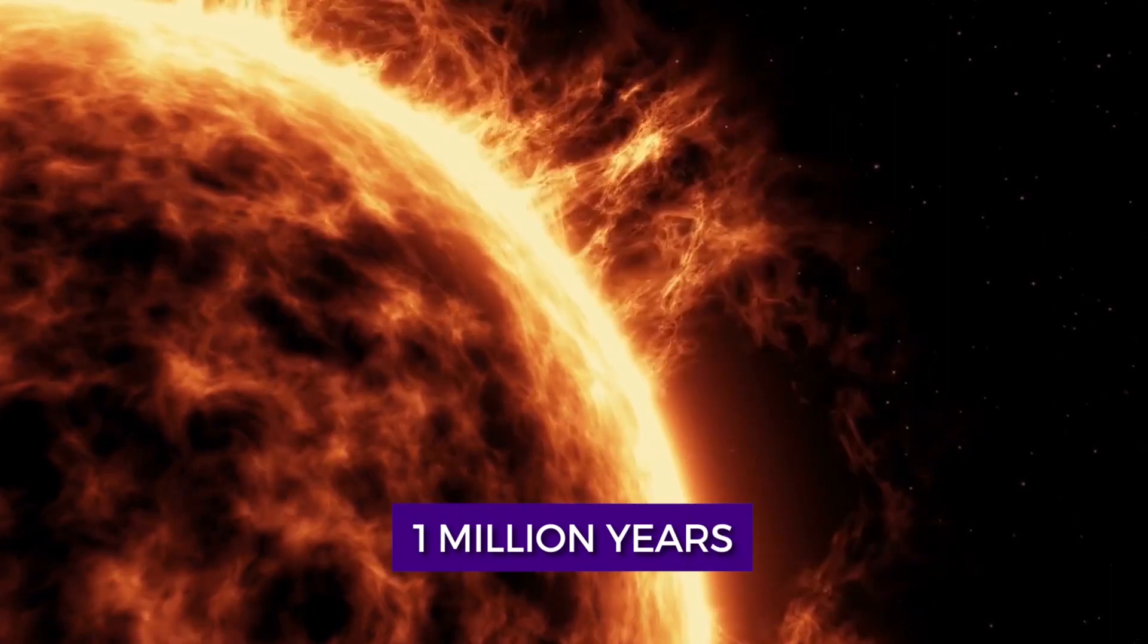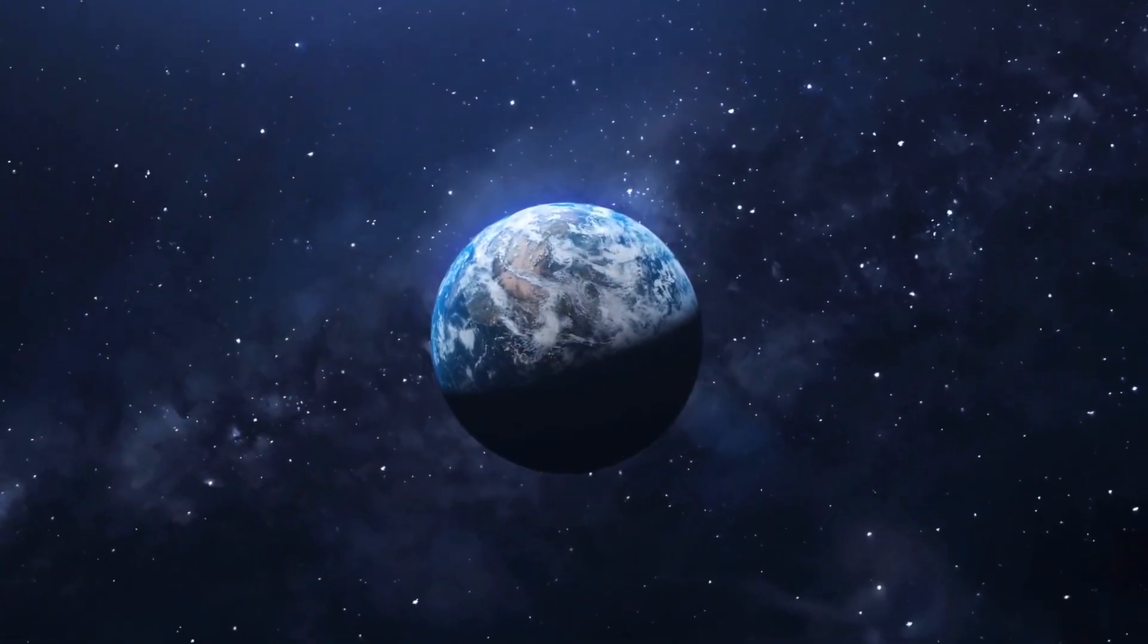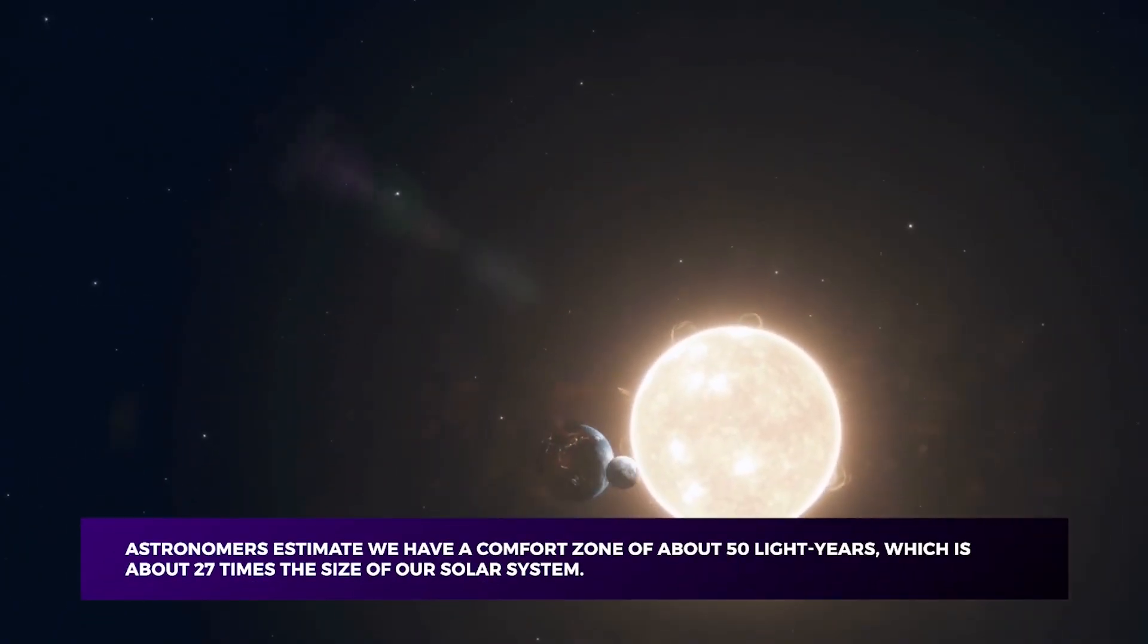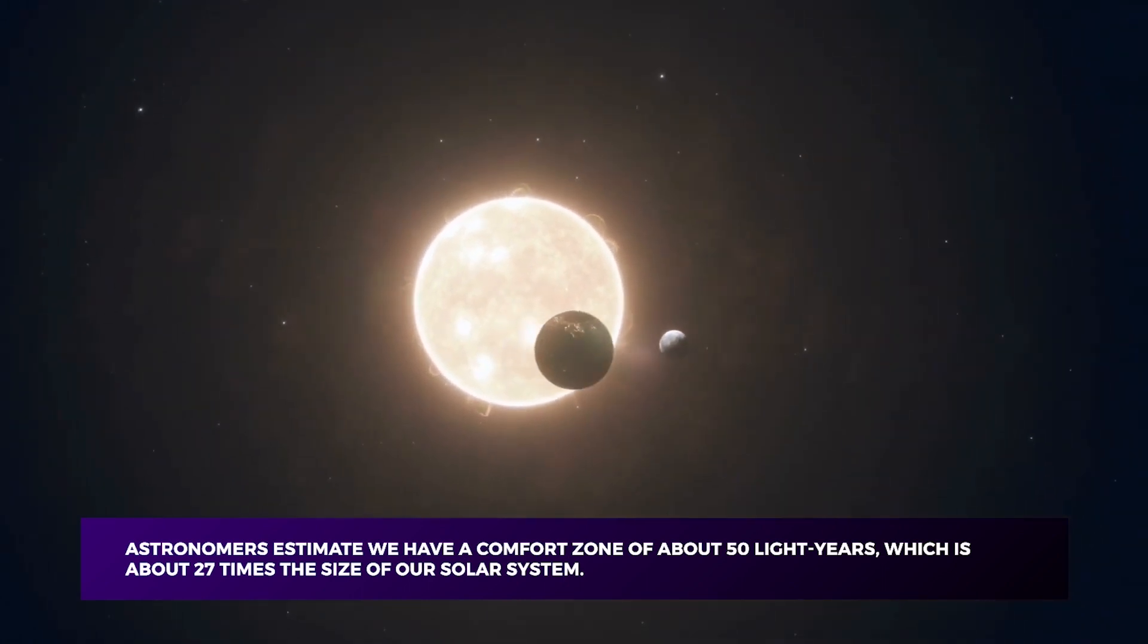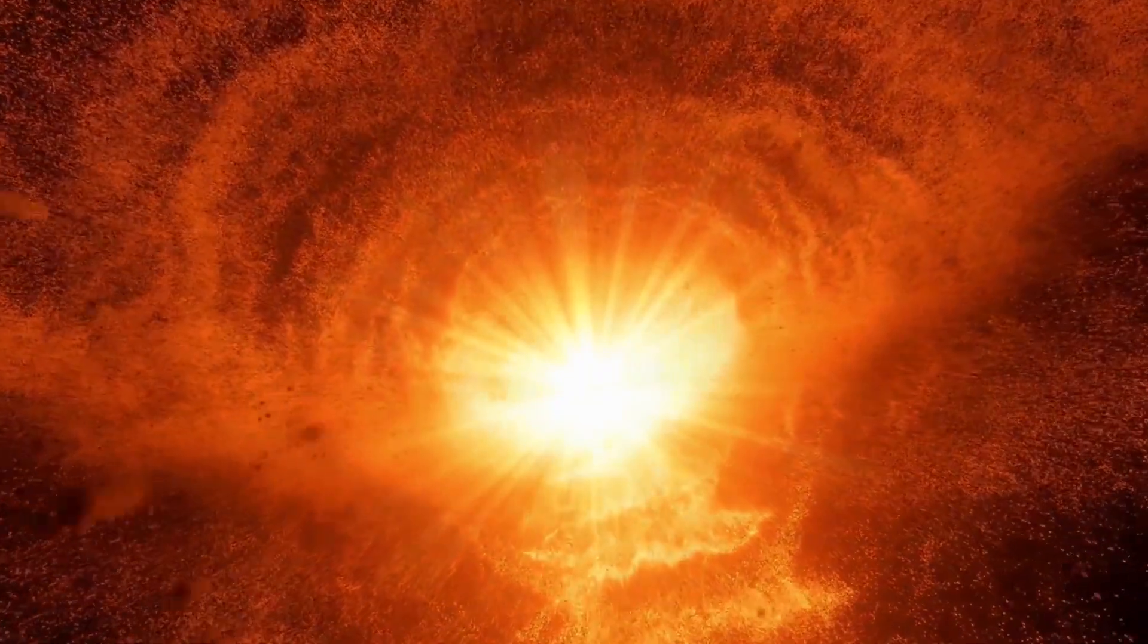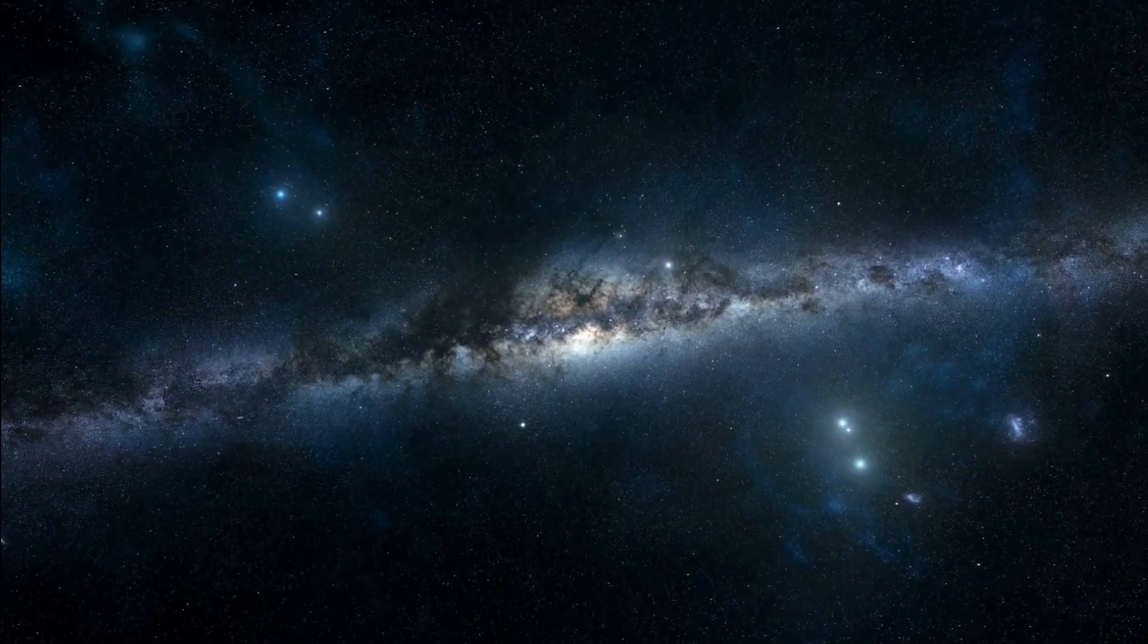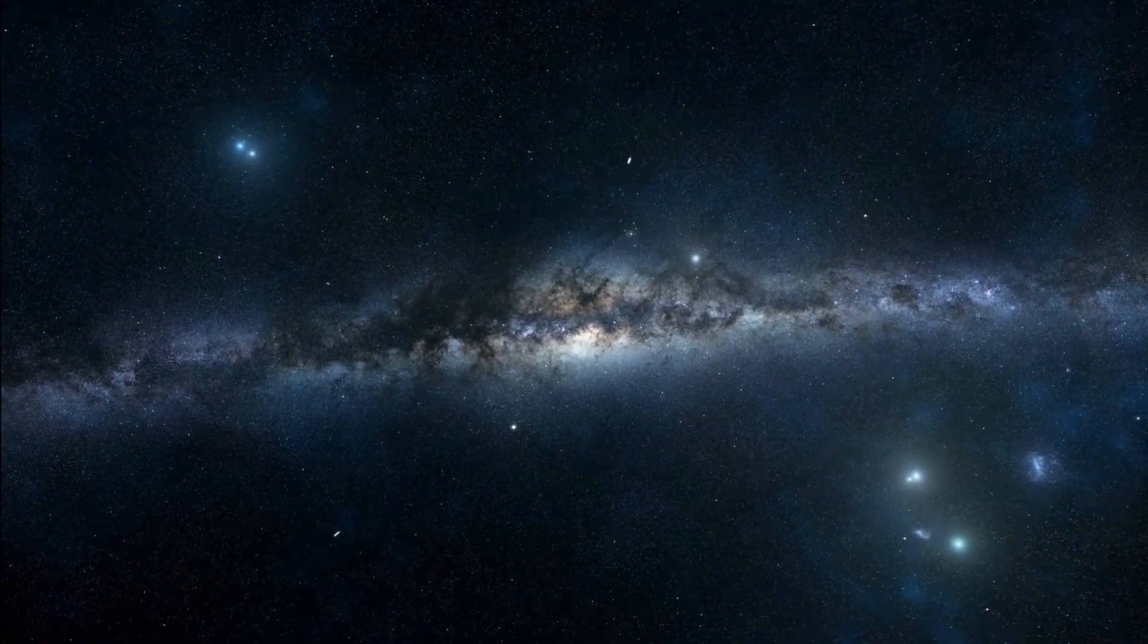The powerful eruptions called supernovae can emit the same energy in a single instant that our sun will generate in over 1 million years. If a supernova goes off close enough to Earth, life as we know it will perish. Astronomers estimate that we have a comfort zone of about 50 light years, which is about 27 times the size of our solar system. Any supernova closer than that, and we would be in danger. 50 light years may seem like a comfortable distance, but we are in more danger now than in the past.